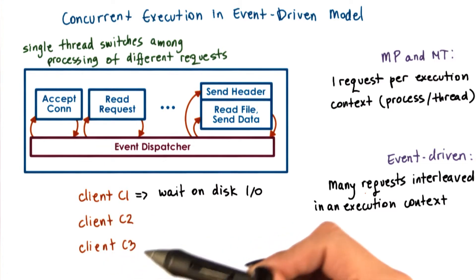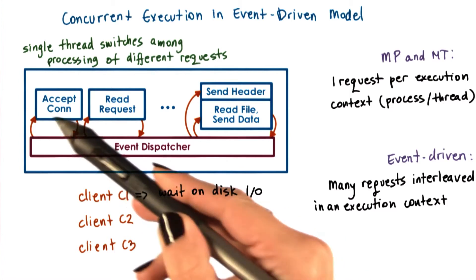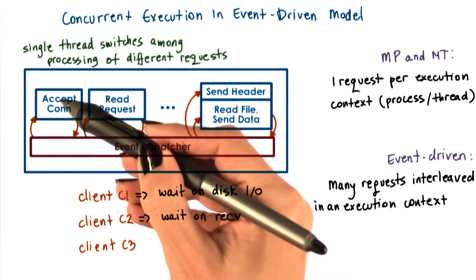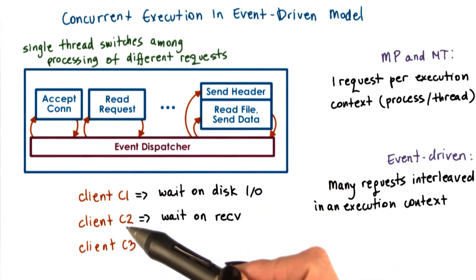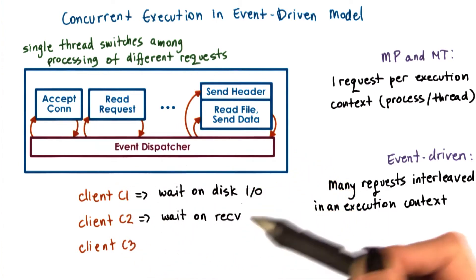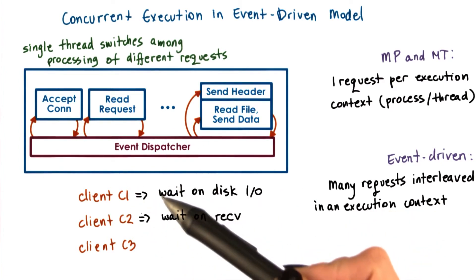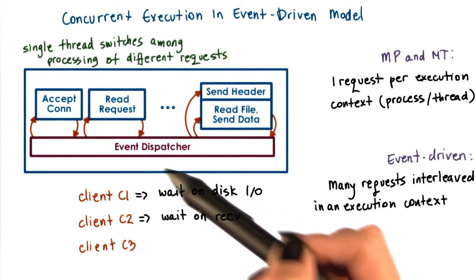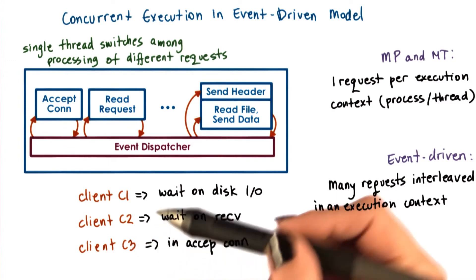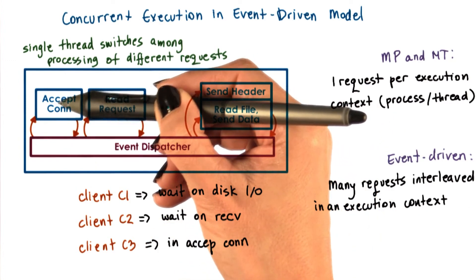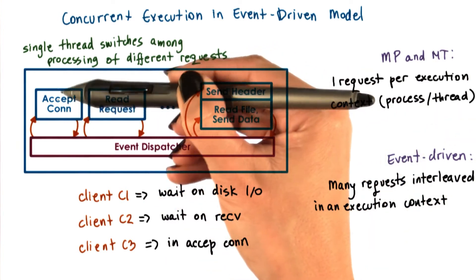In the meantime, two more requests have come in — client C2 and client C3 have sent a request for a connection. The client C2 request was picked up first, the connection was accepted, and now for the processing of client C2 we need to wait for the actual HTTP message to be received. So the processing of client C2 is waiting on an event from the network. Client C3's request has been accepted and is currently being handled in the accept connection handler.